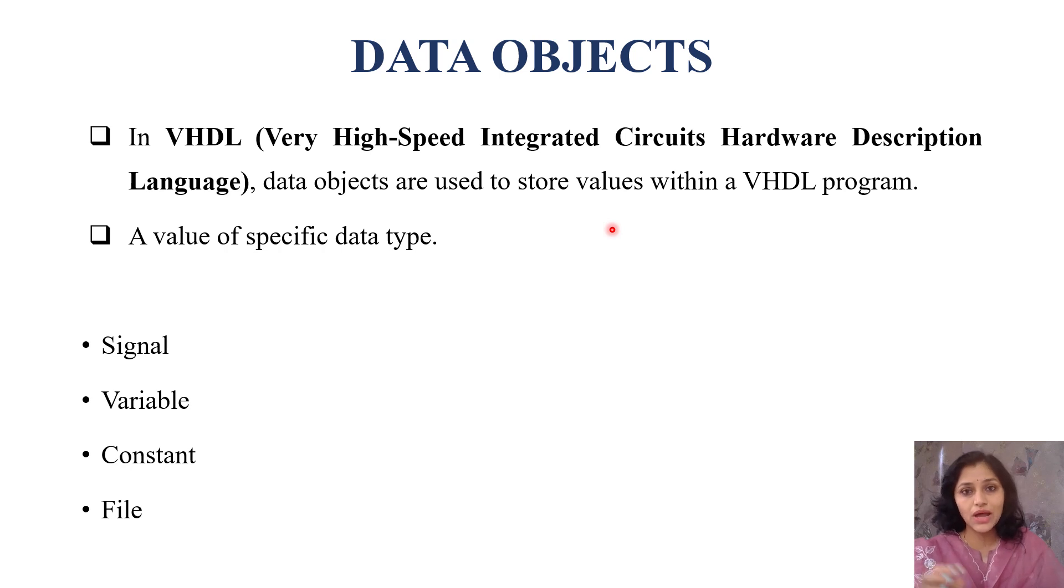Within VHDL program to store values of data types, we use data objects and those values can be of any specific data type like integer, standard logic, boolean, or bit binary. There are four data objects: signal, variable, constant, and file.